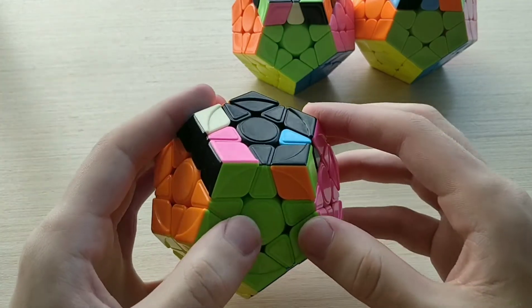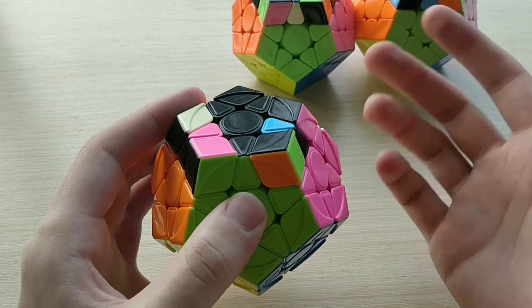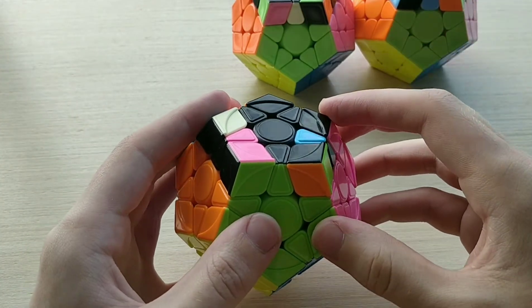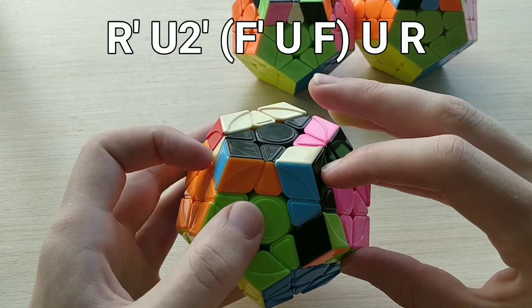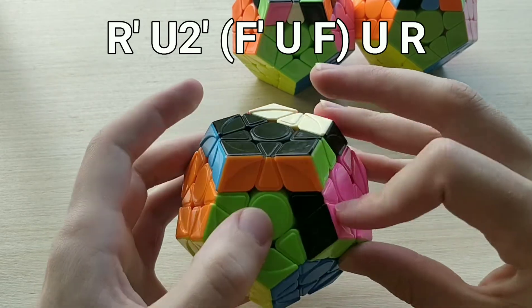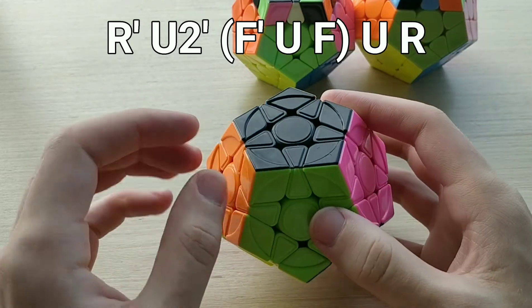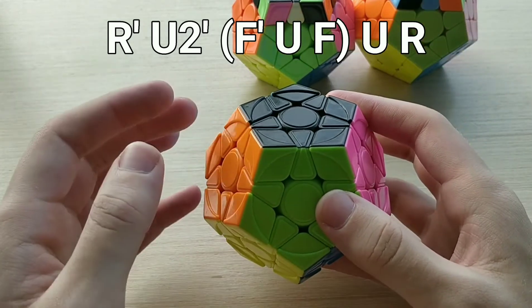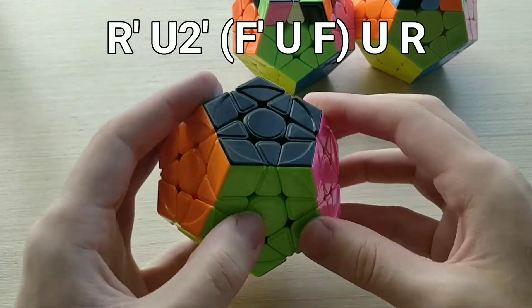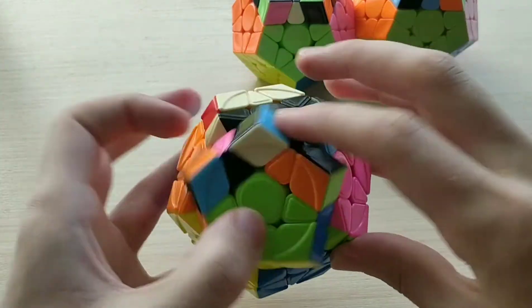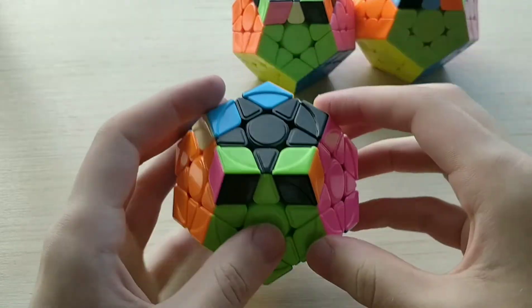What I'd recommend, and the alg that I made, is this one here, which is the inverse of 9b plus. So it goes like this, r prime, u2 prime, f prime, u f, u r. So we've got those push moves in the middle and that drag move, so I guess the finger tricks might take a little bit of time to get used to, but once you are used to them, it's a pretty fast alg, as you can see.